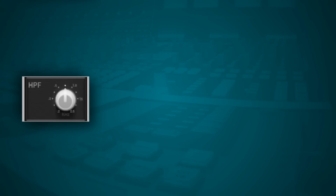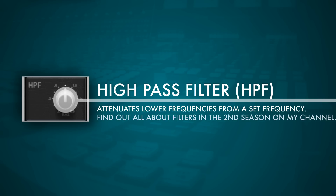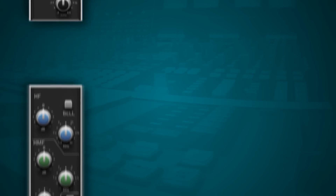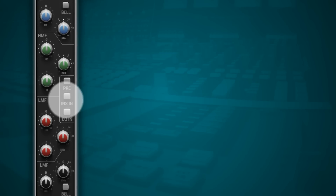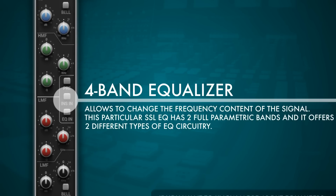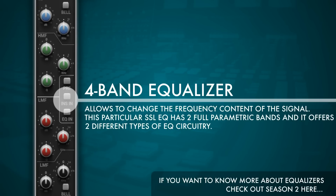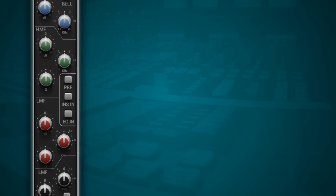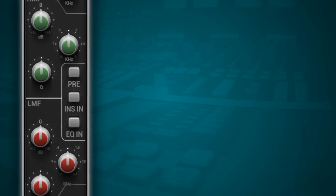Going down the channel strip, we find the high pass filter, which allows us to remove the very low end of a signal. On this Solid State Logic console we then find a four-band equalizer with two parametric EQs, which even offers two different types of EQ circuitry.